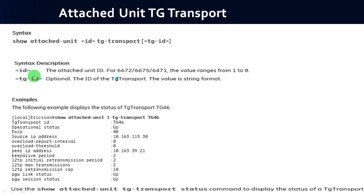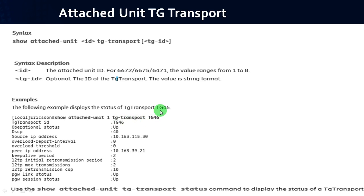To get the status of the TG transport of the attached unit, follow the syntax: show attached-unit <id> tg-transport <tg id>. The id is the attached unit id with values ranging from 1 to 8, and tg id is optional in string format. Example: show attached-unit 1 tg-transport tg46. The output shows: TG transport id tg46, operation status up, source IP 10.163.115.30, destination IP 10.163.39.21, link status up, and session status up.